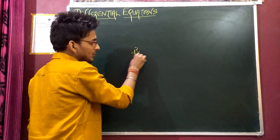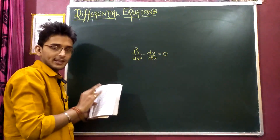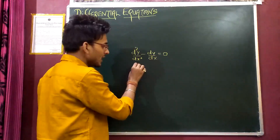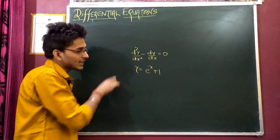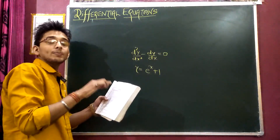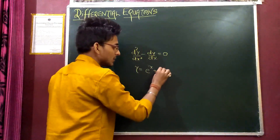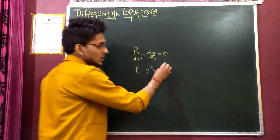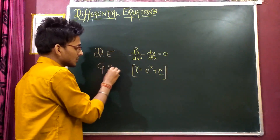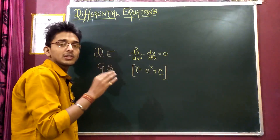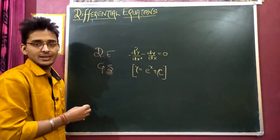When dy/dx is equal to zero, this is the first reference. You can see this solution. This equation is the general solution — which contains arbitrary constants. The arbitrary constant can take values 1, 2, 3, 4, 5, negative, fractional — any value belonging to the real number set.